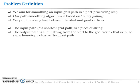So the output path is a taut string from start to goal vertex that is in the same homotopy class as the input path. It will be located between which obstacles that original input grid path moves.